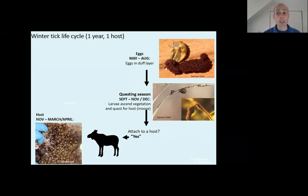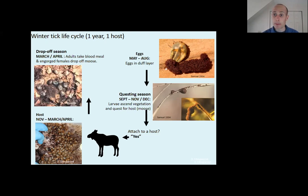The ticks stay right on through the course of the winter. They take a blood meal, morph into the nymph life stage, which takes a blood meal midwinter, and then morph into the adult life stage, which takes a blood meal in March and April. It's that adult size that takes the most blood and has the most substantial impact. Those adult engorged females drop off in March and April, lay eggs, and the adult males take a little blood and then fall off and die. So it's a one-year life cycle, unlike black-legged ticks and American dog ticks.